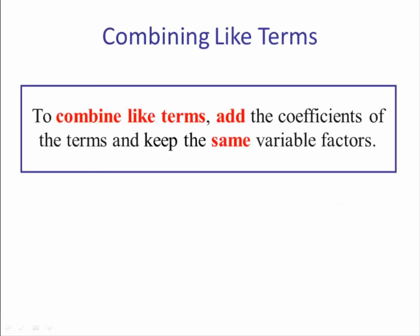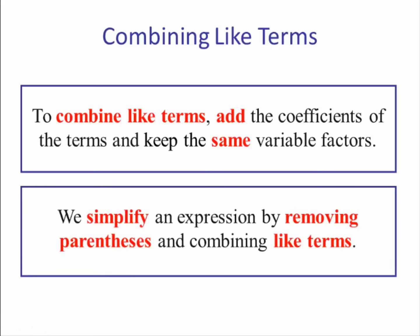Combining like terms: to combine like terms, you add the coefficients — the numbers in front of the variables — and keep the same variable factors. We simplify an expression by removing parentheses and combining like terms.